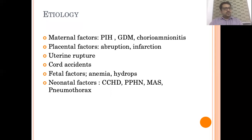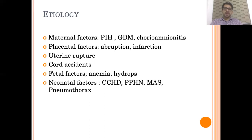Coming to the etiology of perinatal asphyxia, the etiology is quite variable and can be due to maternal factors, placental factors, uterine factors, cord accidents, and fetal factors such as anemia or hydrops. Even neonatal factors such as critical heart disease, PPHN, MAS, and pneumothorax can contribute to perinatal hypoxic ischemic damage.